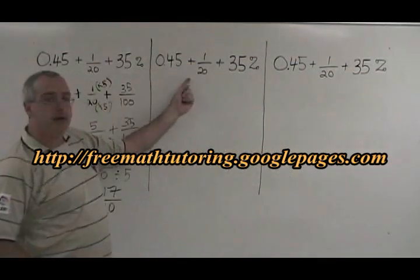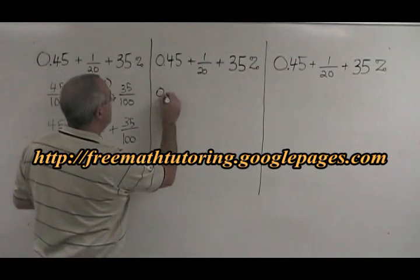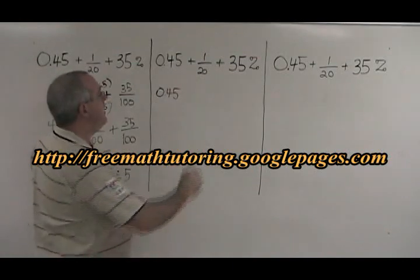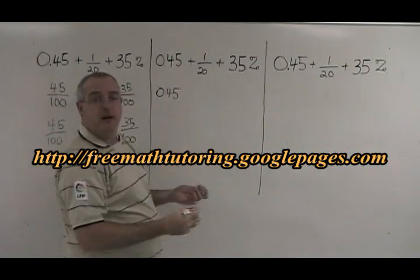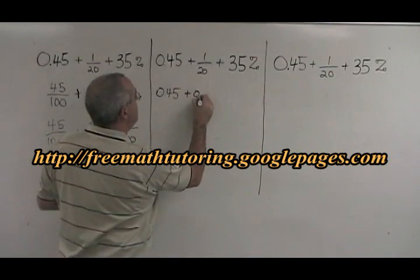Here's the same example, but this time I'm going to convert all three into decimal form. 0.45 is already in decimal form, so I leave it that way. 1 divided by 20, done with long division or in my calculator, will give 0.05.